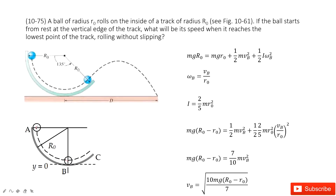First of all, we consider the initial energy. We take point B as a reference point. So the potential energy at position A is mgR₀, where R₀ is the distance from A to the reference point.